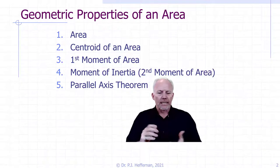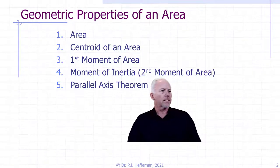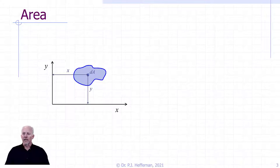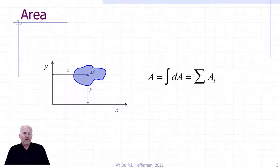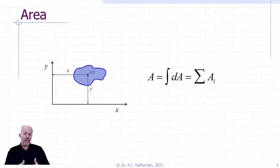Some of them, as you will see — area, for example — are something that you're well familiar with. It's almost trite to throw it in here as a geometric property, but it's an important one, so we do. The area is defined as the integral of dA. And if you were to do that as a sum of component parts, you could change the integral sign for a summation sign and break the area into identifiable bits. The key point is recognizing that the integral of dA is the area, because we're going to see that come up time and again when we look at the other geometric properties of the cross-section.